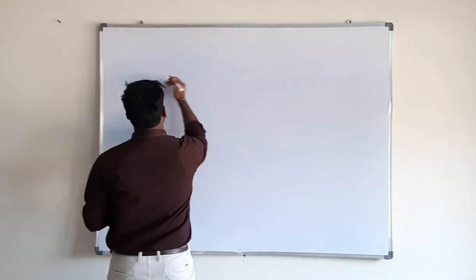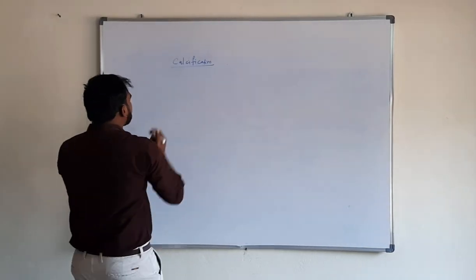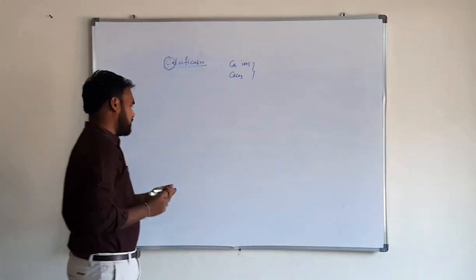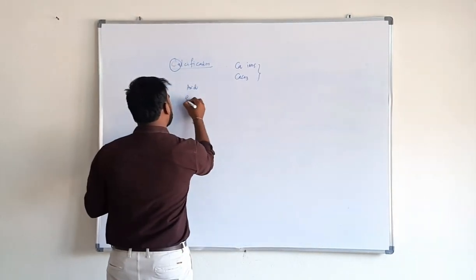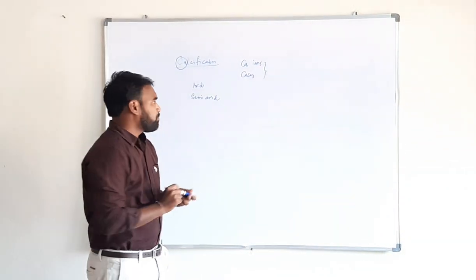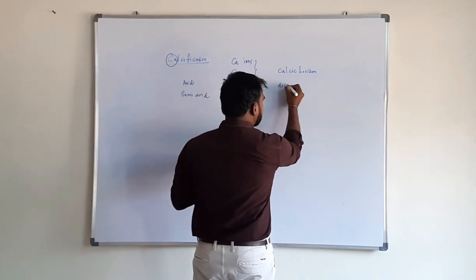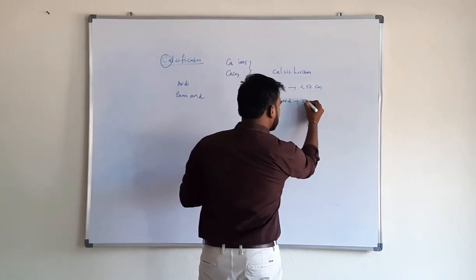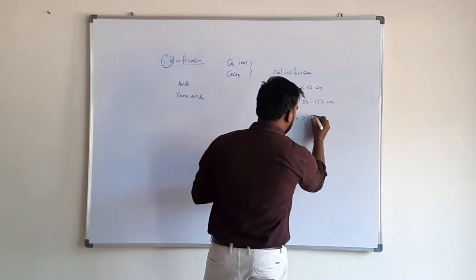Coming to calcification: calcification is nothing but accumulation of calcium ions or calcium carbonate in some part of the soil profile. Calcification mainly occurs in arid and semi-arid climatic conditions and leads to the formation of calcrete. The depth of calcification in arid climatic conditions is less than 50 cm, in semi-arid it is 50 to 150 cm, and in humid climatic conditions it is greater than 150 cm.